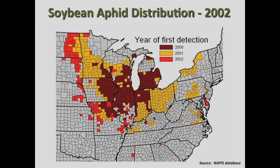It was found in North Dakota in 2001, and since then it's been a major pest of soybeans in North Dakota.